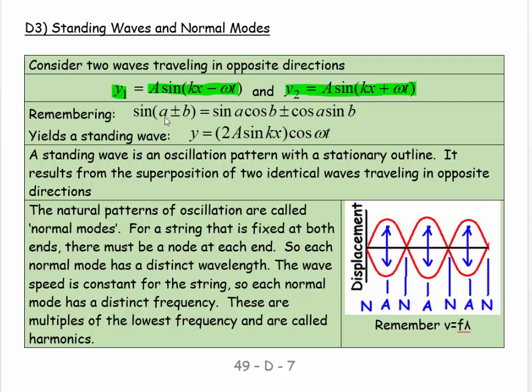And if we remember that sin(a plus or minus b) equals sin a cos b plus or minus cos a sin b, we get an answer. And the answer is y equals 2A sin kx cos omega t. The omegas are the same.